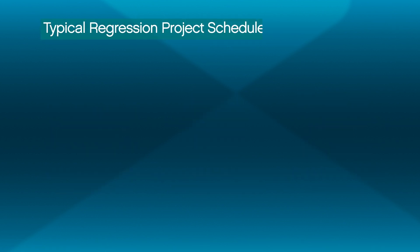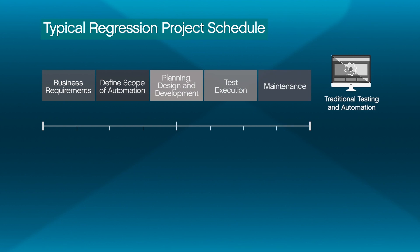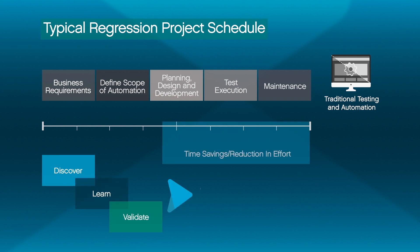Traditional regression testing, manual or automated, requires time and effort to discover, plan, build and maintain. In contrast, robotic test automation with Testimony addresses both the creation and execution of a robust regression test plan. This saves your organization effort and time, accelerating the delivery of change while increasing confidence in each delivery.